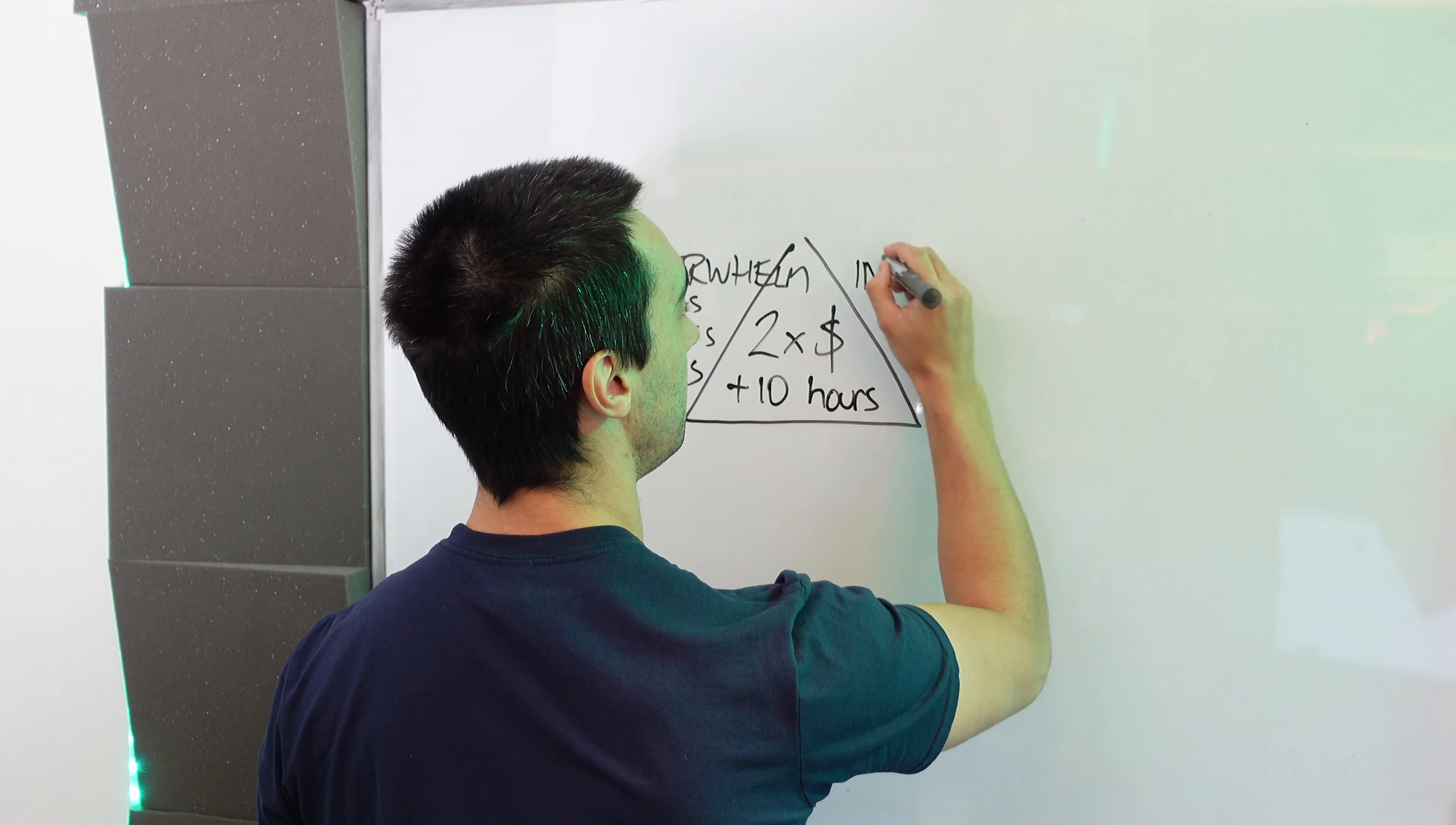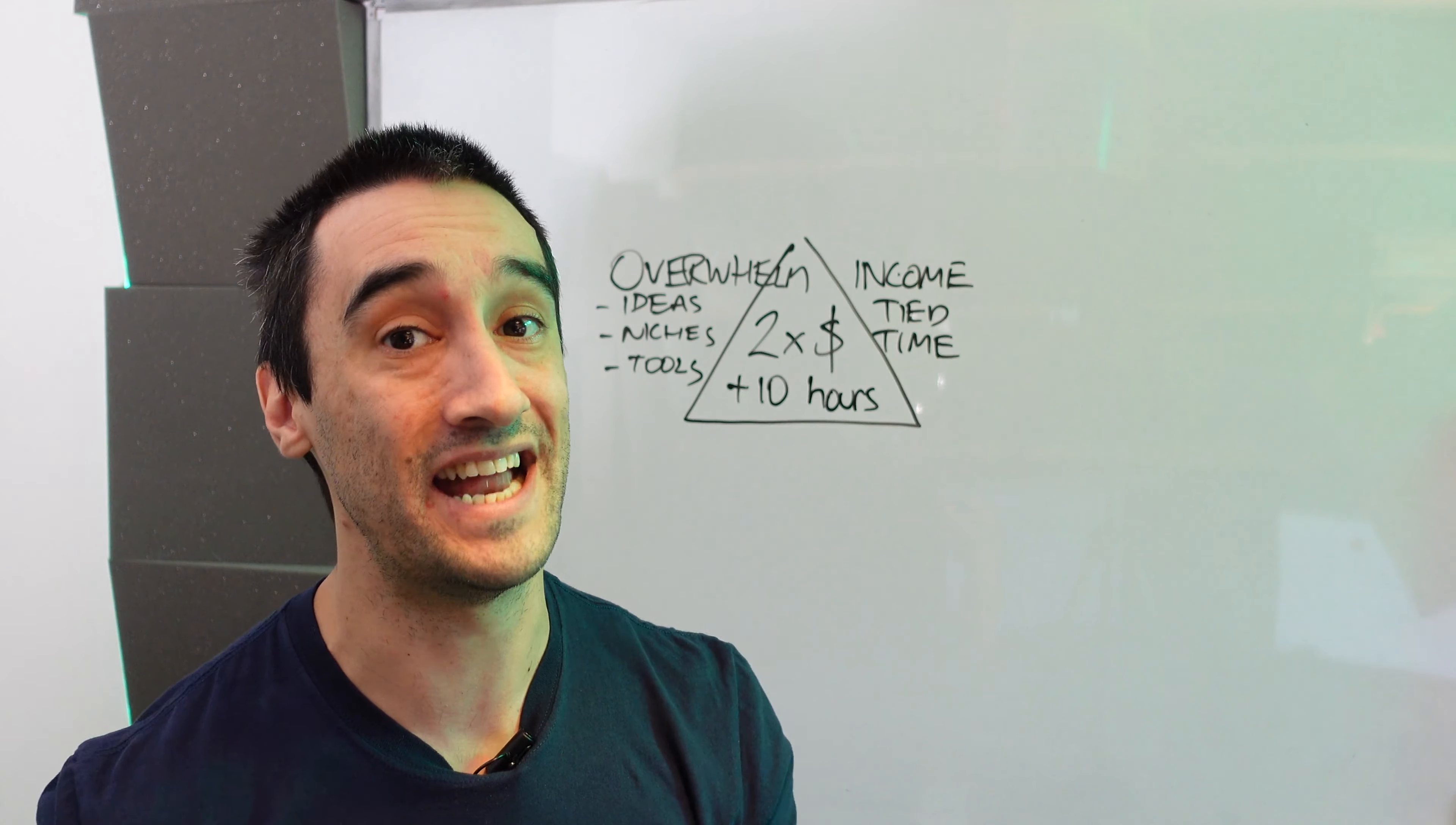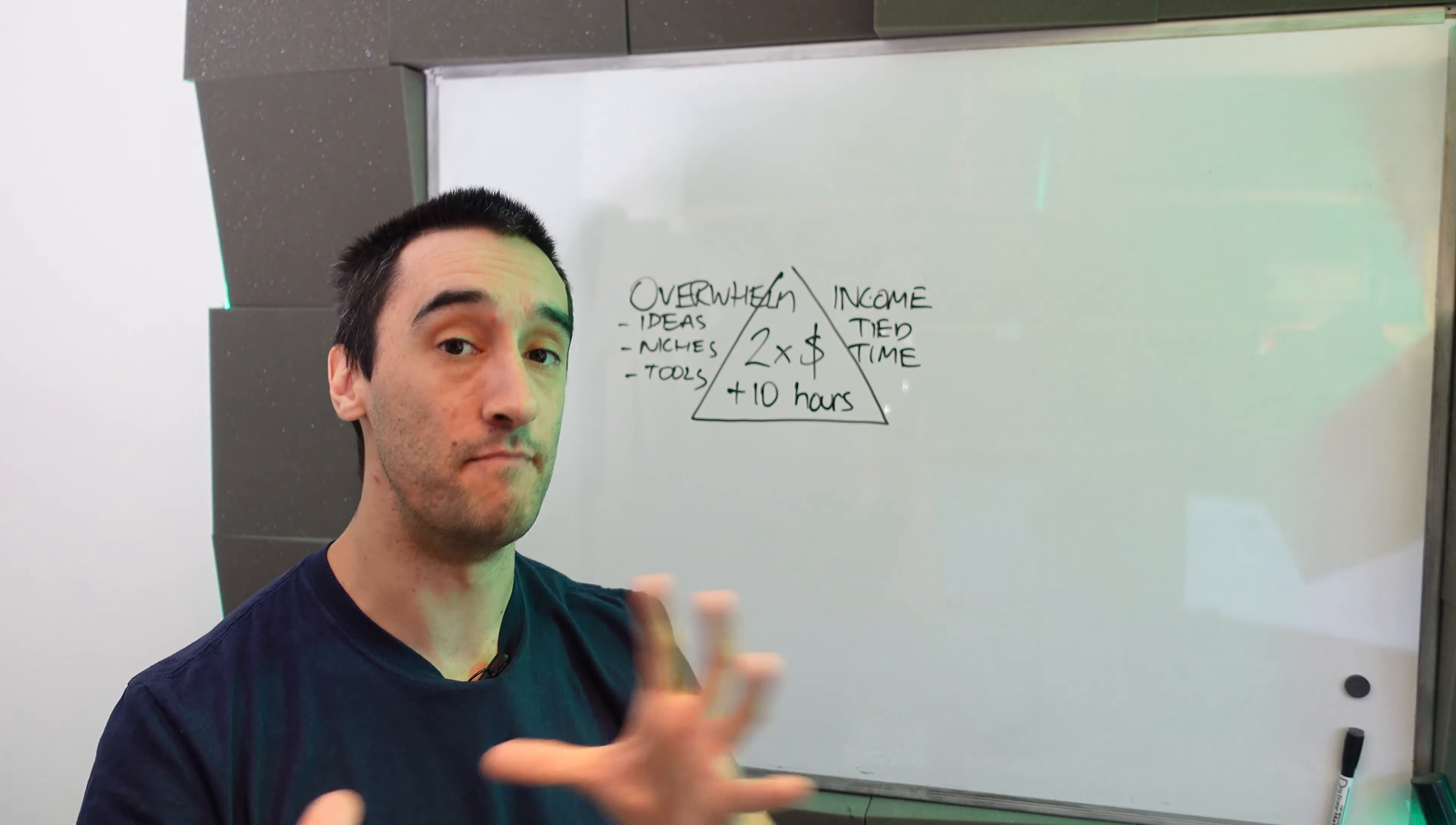The second thing is income tied to time. So what I mean by this is if you can't take four weeks off, this is the litmus test. If you can't take four weeks off from your business and it still makes money and grows and does all the things like lead generation and conversion and closing and delivery, you don't have a business. You basically have a job. So if your income is tied to time, that is going to massively restrict the amount of money that you can make.